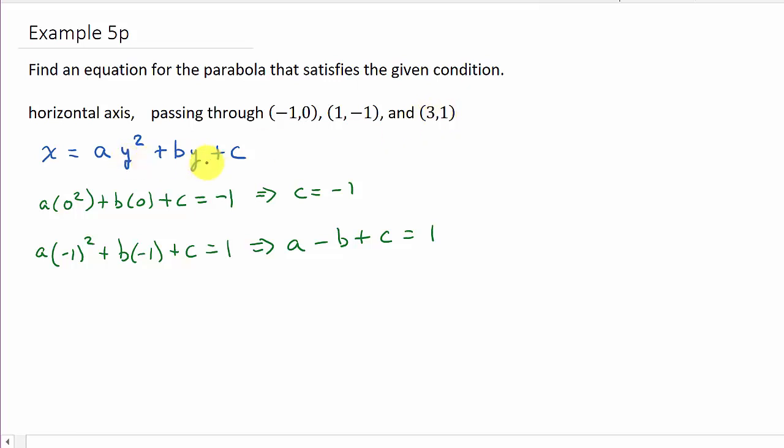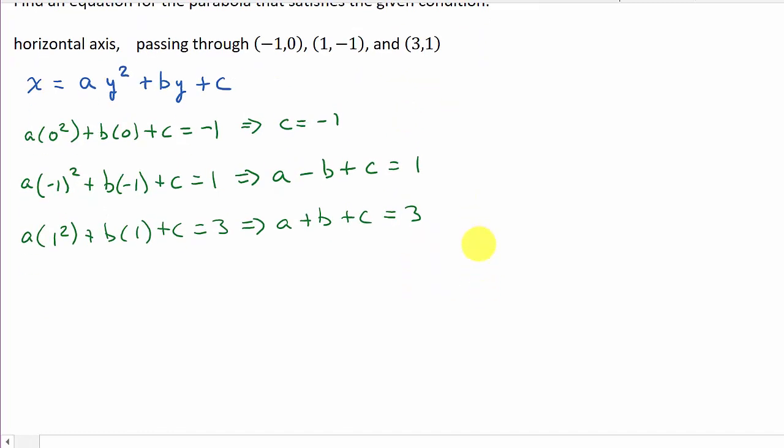So we'll plug 1 in for y. So a times 1 squared plus b times 1 plus c equals the x value, which is 3. And so this gives us, well 1 squared is 1, so that's going to be a and then plus b plus c equals, and this equals x, which in this case is 3.